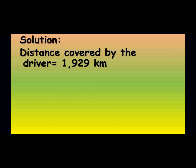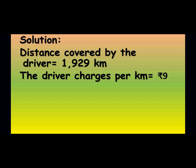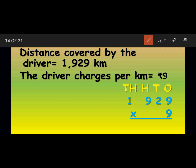Solution: distance covered is 1929 kilometers. The driver charges 9 rupees per kilometer. We are going to do multiplication of 1929 into 9. Here we have only one digit, so you will get the answer in only one line. Nine nines are 81 — write 1, carry 8. Remember: write the first digit down and the second digit is the carry.